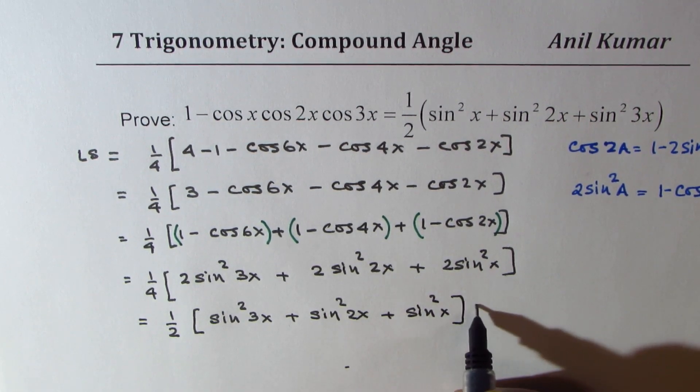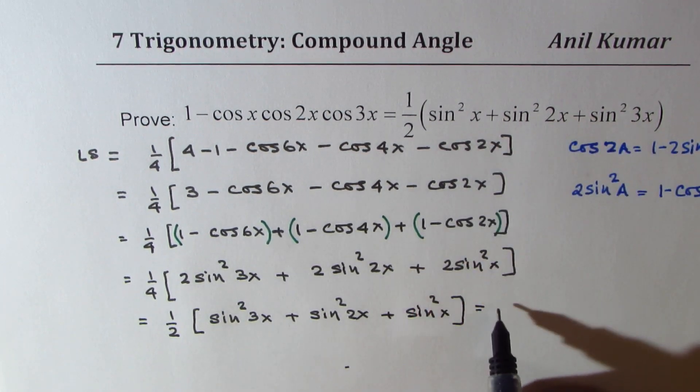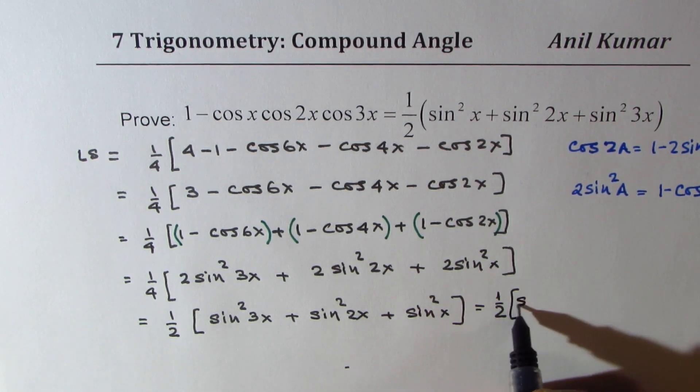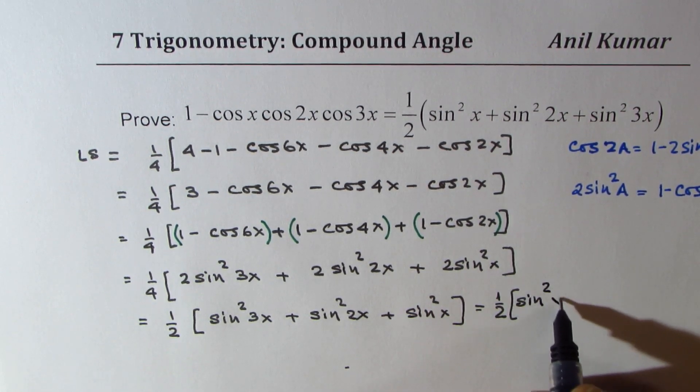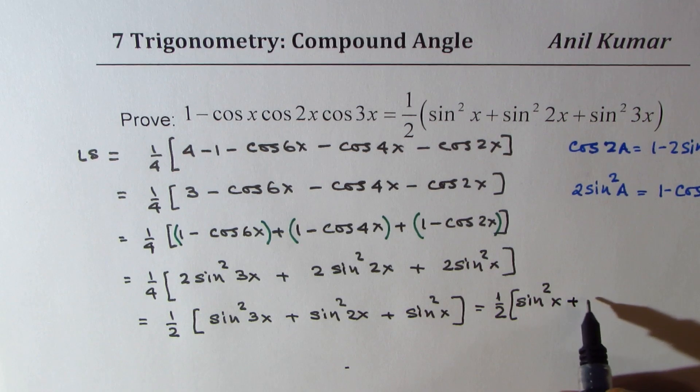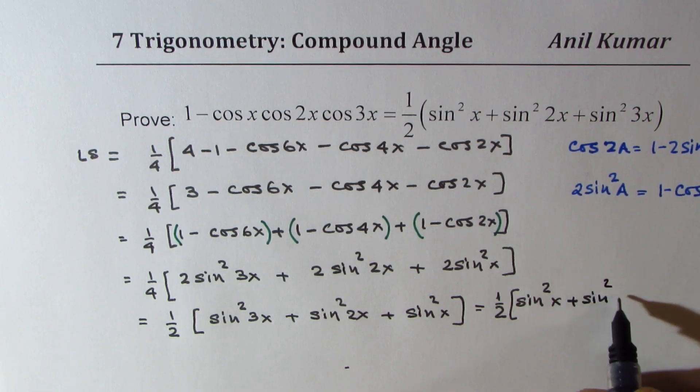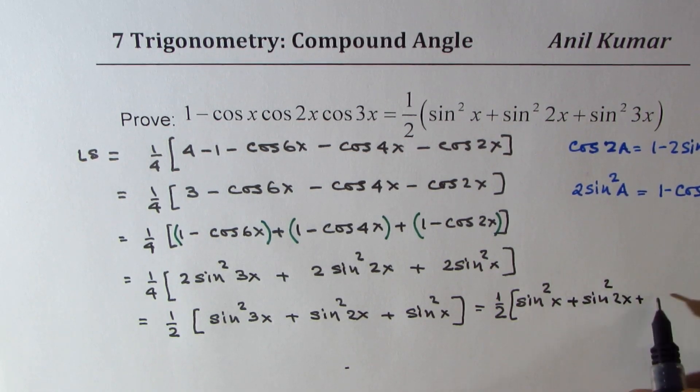Perfect. Or, this is equal to the right side, which is half of sine square x plus sine square 2x plus sine square 3x.